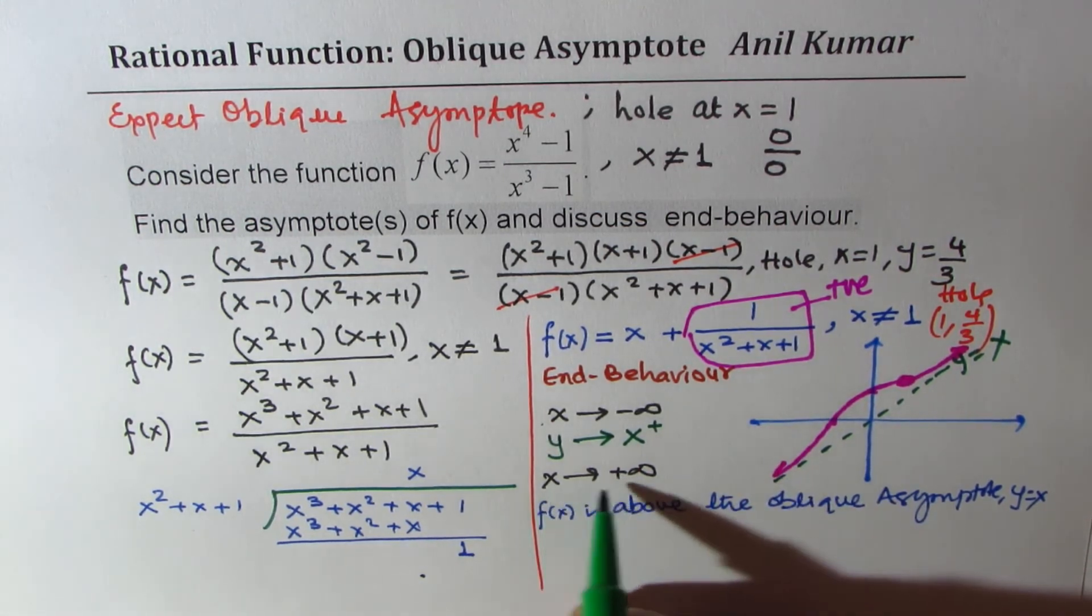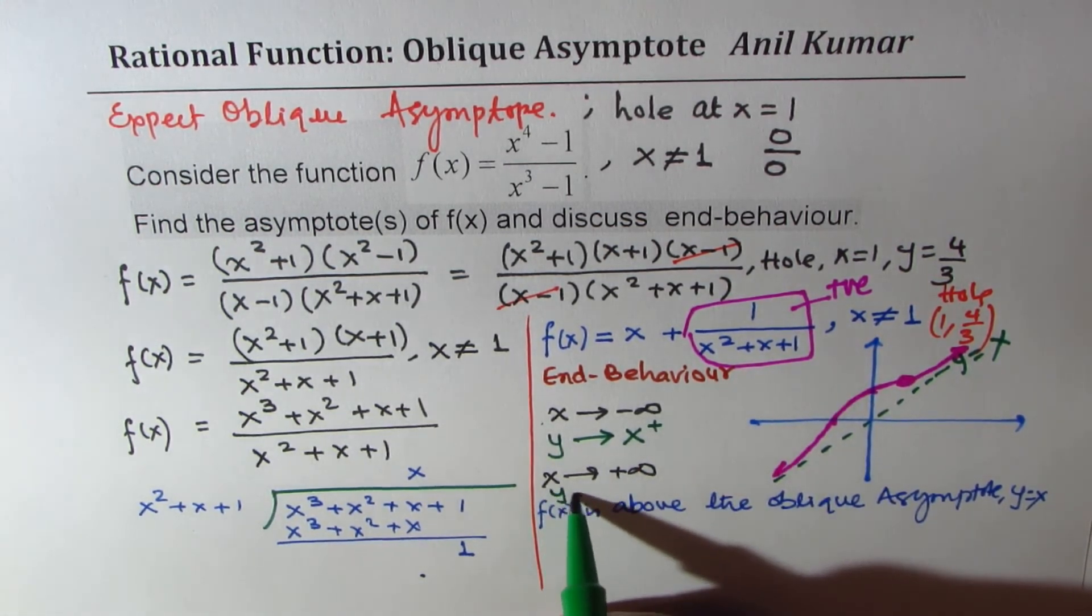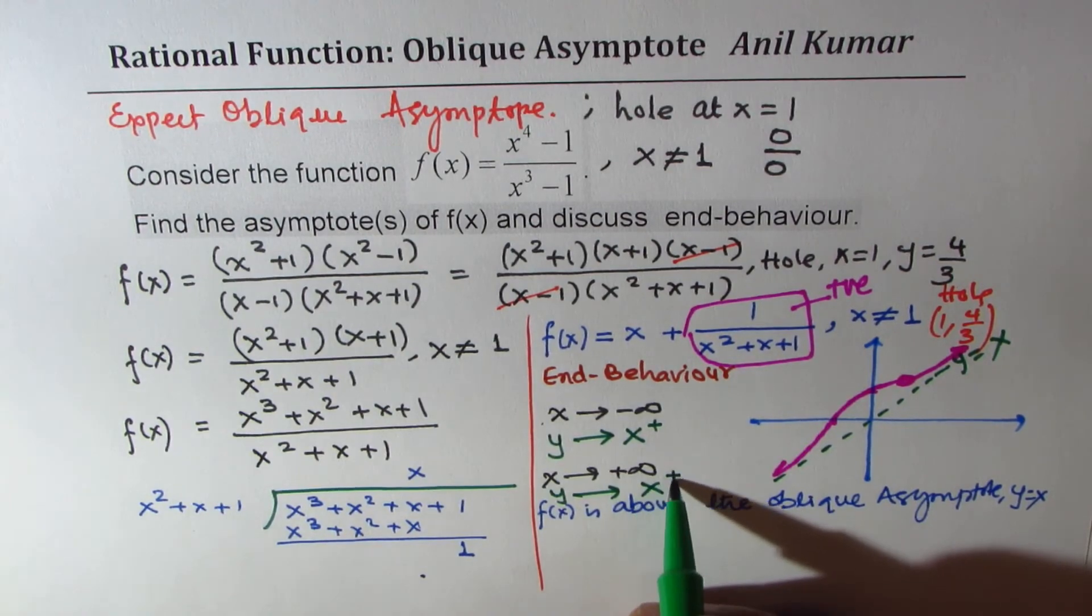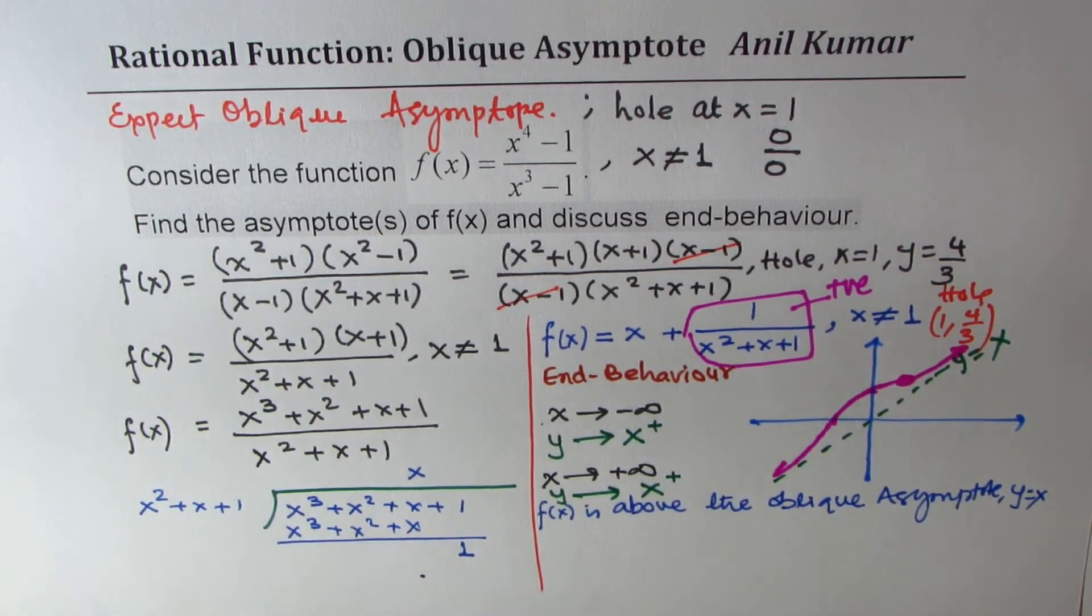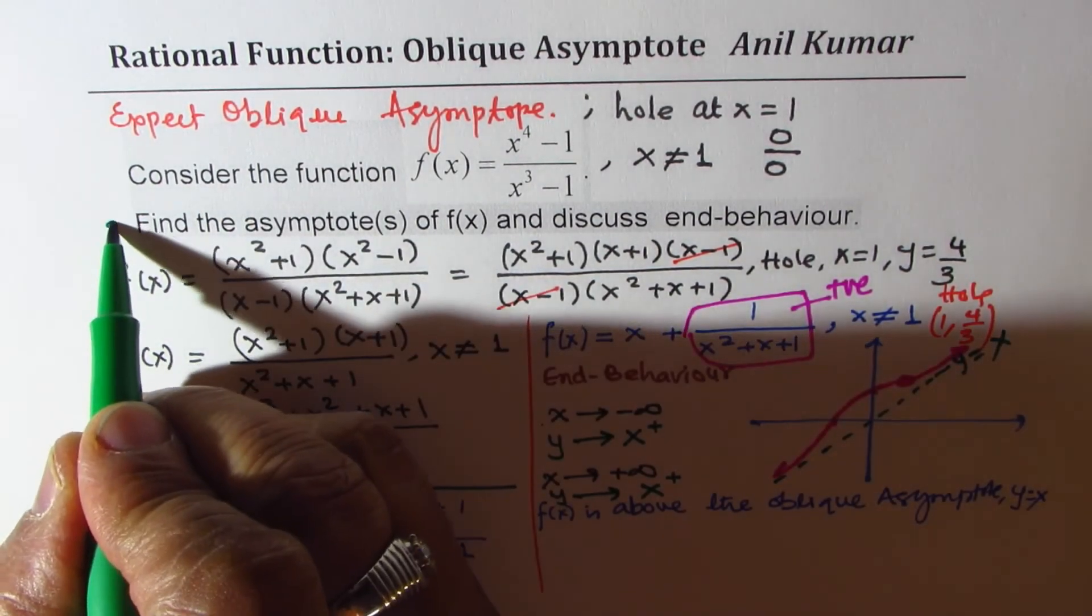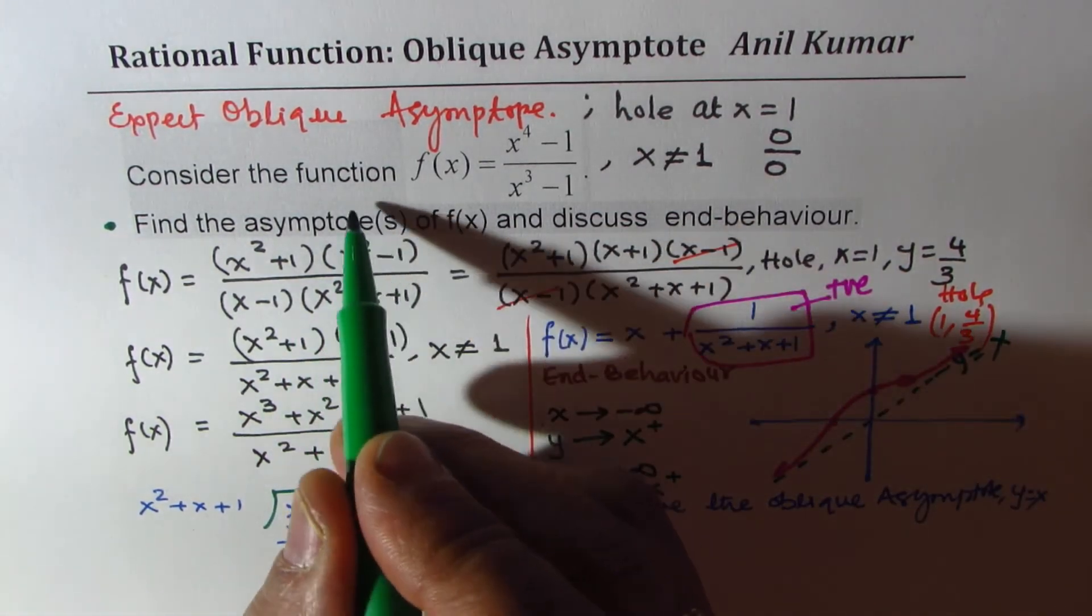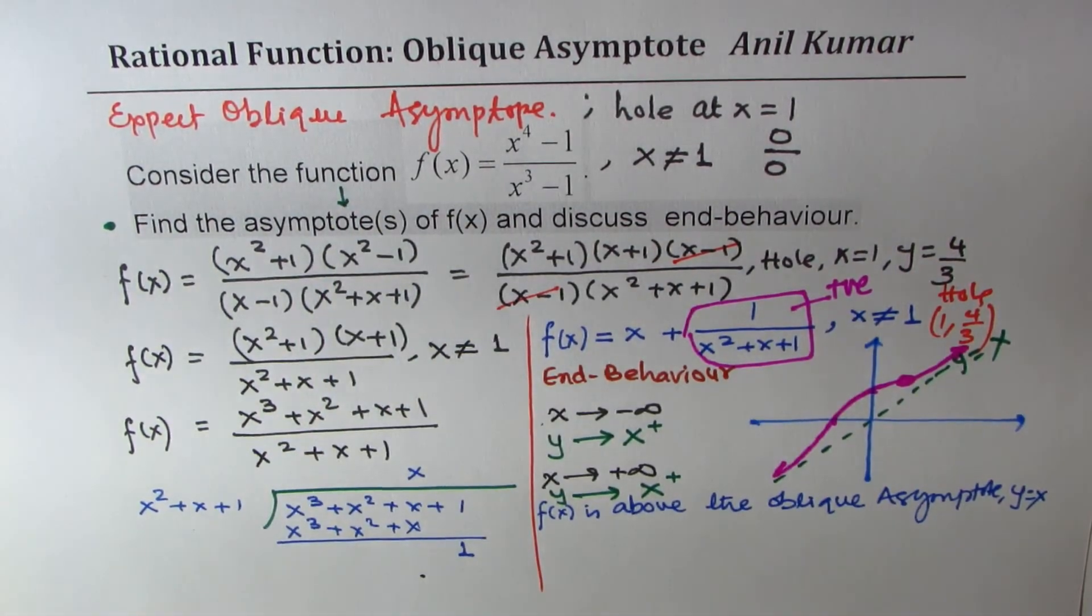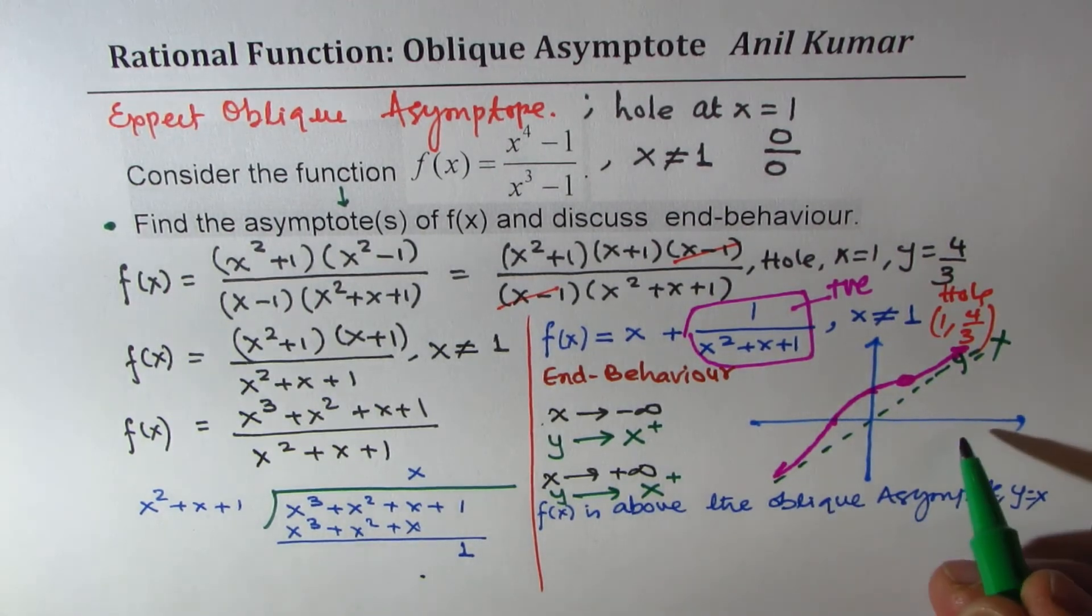Similarly, when x approaches positive infinity, y approaches x from above. Do you get the idea? So that becomes the end behavior. And we have only one asymptote here, which is an oblique asymptote. And that is how our graph is going to look like. I hope that makes sense.